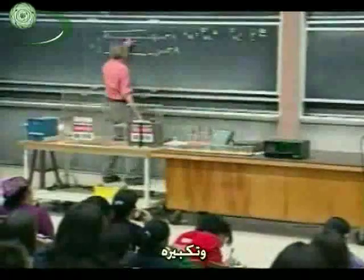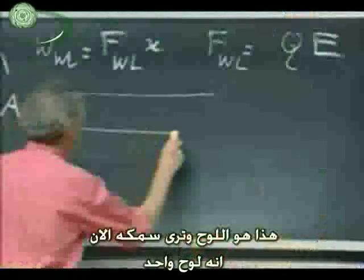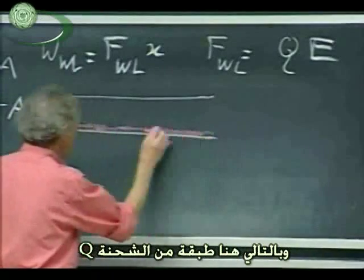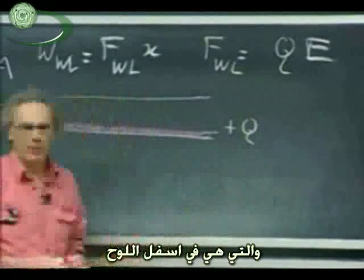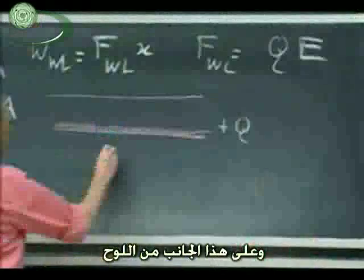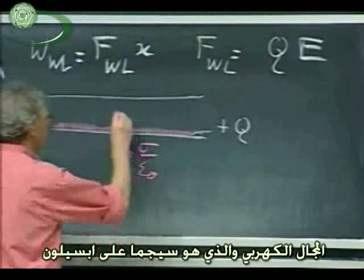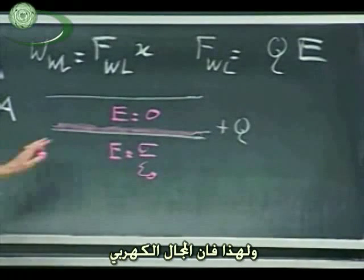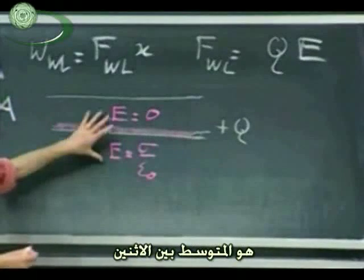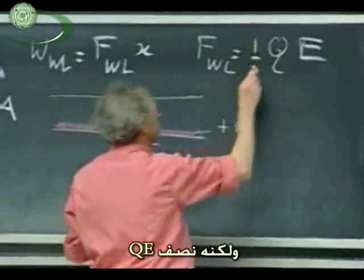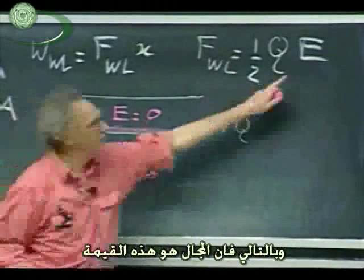Let me take this plate here and enlarge it. So here is the plate — you see the thickness of the plate now. We all agree that the plus charge is at the surface, but of course it has to be in the plate. There is a layer of charge Q at the bottom of the plate; the thickness of that layer may only be one atomic thickness, but it's not zero. On this side of the plate the electric field is sigma divided by epsilon zero, but inside the plate, which is a conductor, the electric field is zero. Therefore the electric field in this charge layer Q is the average between the two. So the force on this charge in this layer is not Q times E, but one half Q times E.